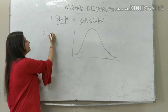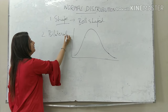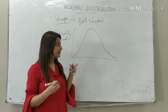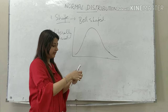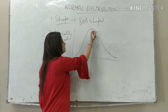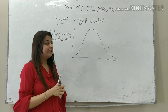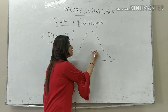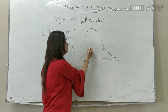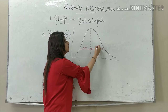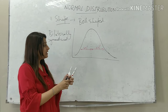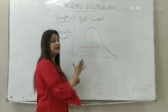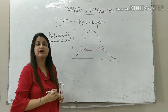The second feature is that it is bilaterally symmetrical. If you drop a perpendicular from the central point toward the base, you will see that the curve is divided exactly into two halves — 50% of the values are above this line and 50% are below. This side of the curve is exactly a mirror image of the other side. That is the meaning of bilaterally symmetrical.